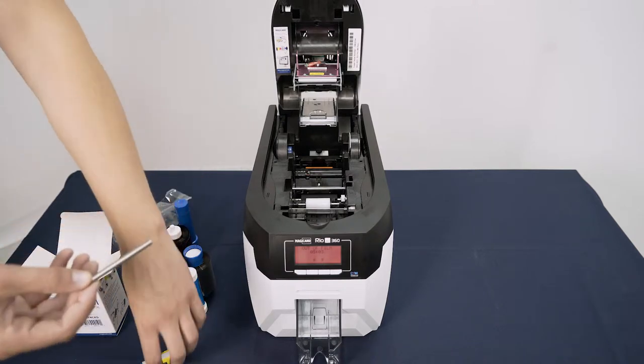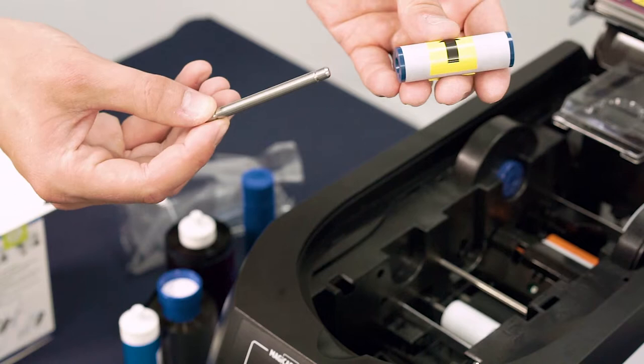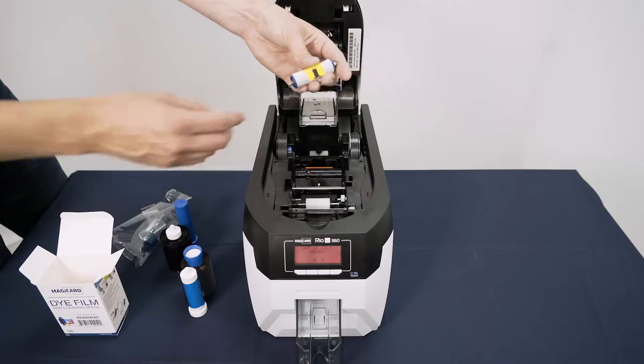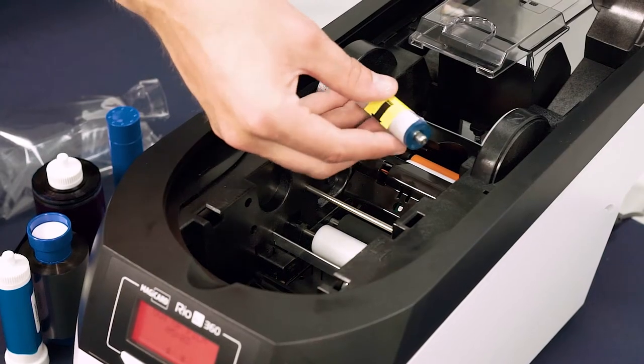Next take your replacement tacky cleaning roller still with protective layer attached and insert the metal bar as shown. Place the tacky cleaning roller towards the back of the printer until you hear a click.